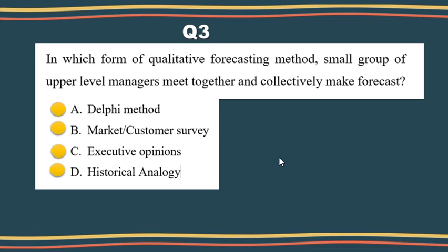In which form of qualitative forecasting method does a small group of upper-level managers meet together and collectively make forecasts? A, the Delphi method. B, market or customer survey. C, executive opinions. D, historical analysis.